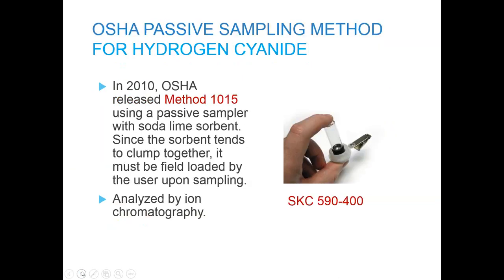A 2010 OSHA method specifies a passive sampler for hydrogen cyanide. This device uses soda lime sorbent — the same as in the active method. Since the sorbent tends to clump together in the passive sampler, the sampler is provided empty and the sorbent comes to you in a vial. To meet the method requirements, the sorbent can then be transferred from the vial to the sampler by the user when sampling begins, which overcomes the clumping concerns.